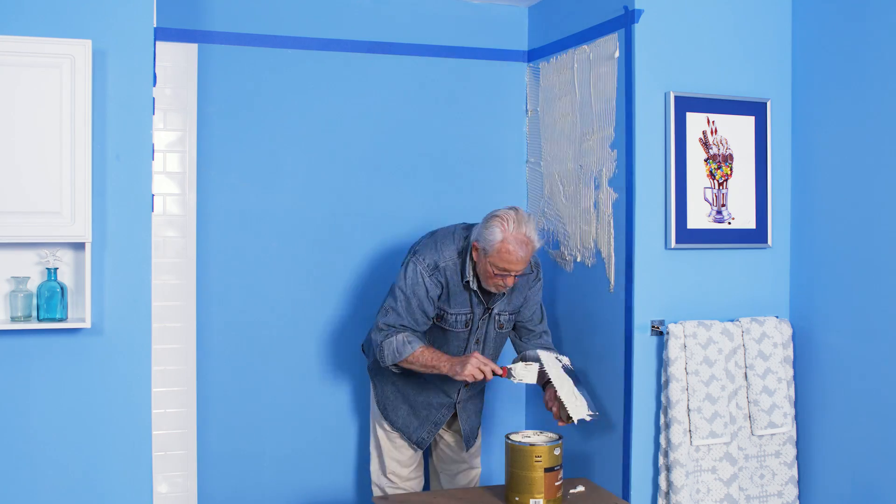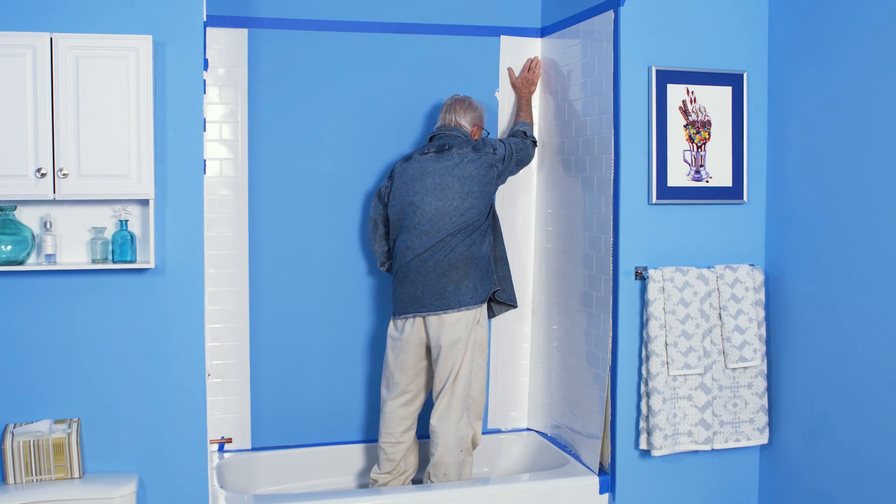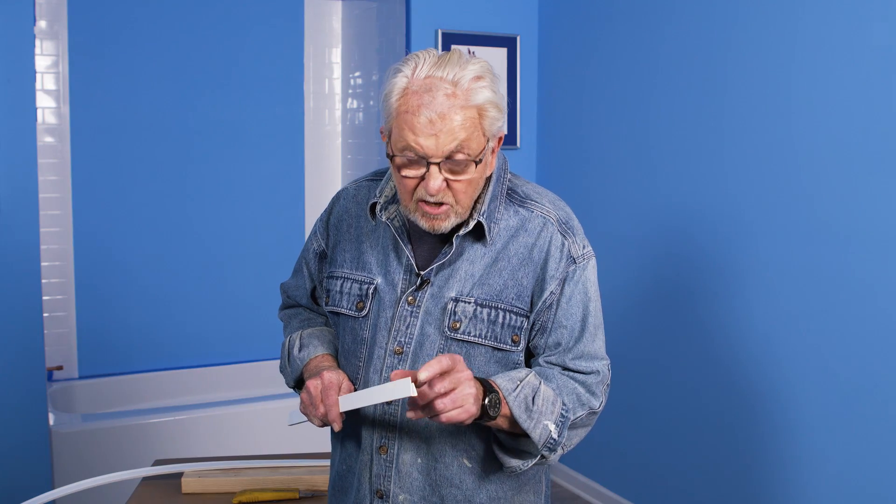With the left panel up, I move to the right panel. This is J channel, and we're going to slip this over the front edge of the panel, so it'll give them a more finished look.